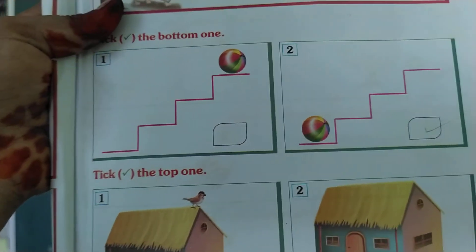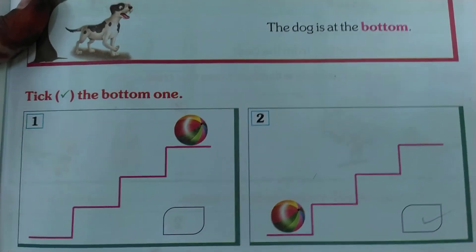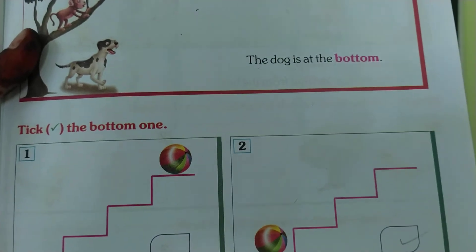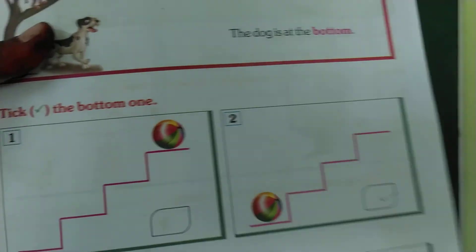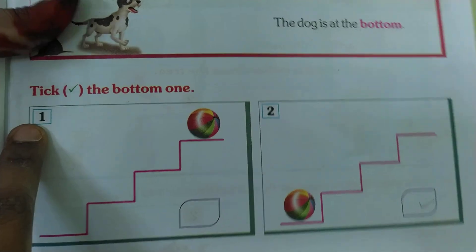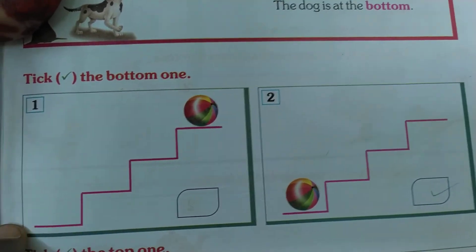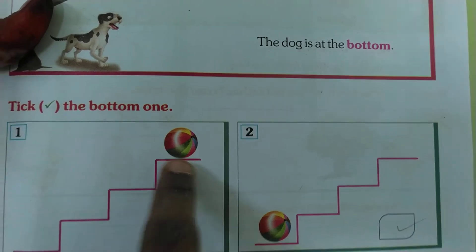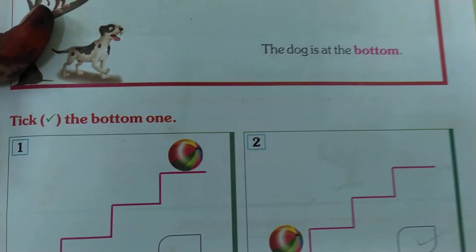Next, here — take the bottom one. Bottom means kinda. In the first picture, there are steps and here is a ball. At the top of the steps, we can observe a ball.